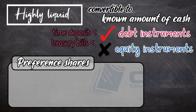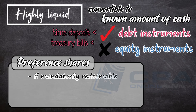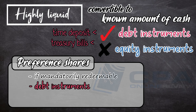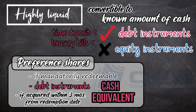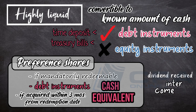However, in the case of preference shares, which are equity instruments by nature — if they are mandatorily redeemable, they now bear a maturity date or term of redemption, and they are now payable in a fixed amount of cash as evidenced by the redemption price. In this case, they are classified as debt instruments, meaning they can now qualify as cash equivalents — that is, if they are acquired 3 months from the agreed redemption date. In effect, dividends received from the redeemable preference shares, which are now debt instruments, are presented as interest income.